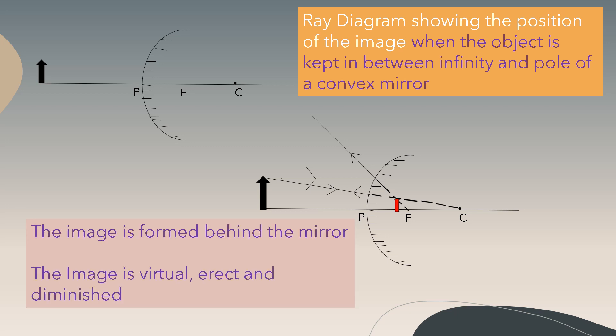The next ray is drawn to the center of curvature. The ray joining the center of curvature passes without any deviation. At the point of intersection we have the image. The image is formed behind the mirror and is virtual, erect, and diminished.